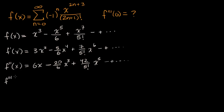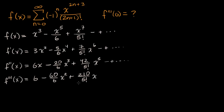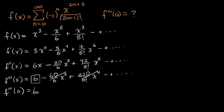Then we get to the third derivative. The derivative of six x is six, then we have minus 20 times three is 60 over six, which is 10, times x squared, plus five times 42 is 210 over five factorial times x to the fourth, and so on. When we evaluate at x equals zero, all the terms with x go to zero, and we're just left with six. So f triple prime of zero equals six.